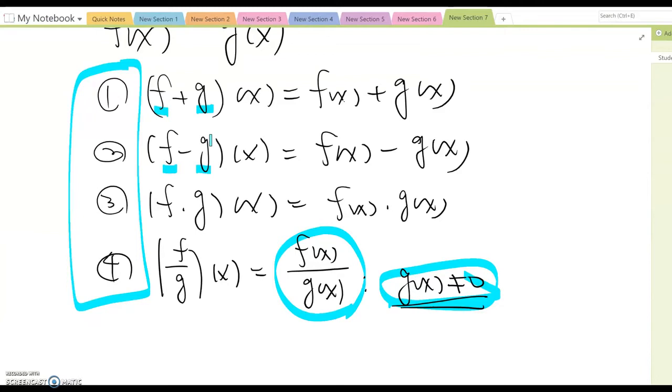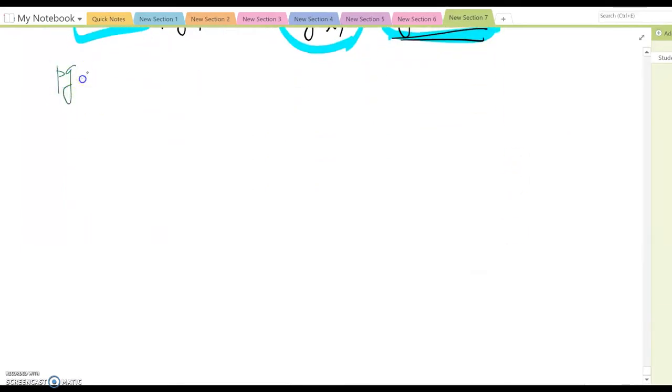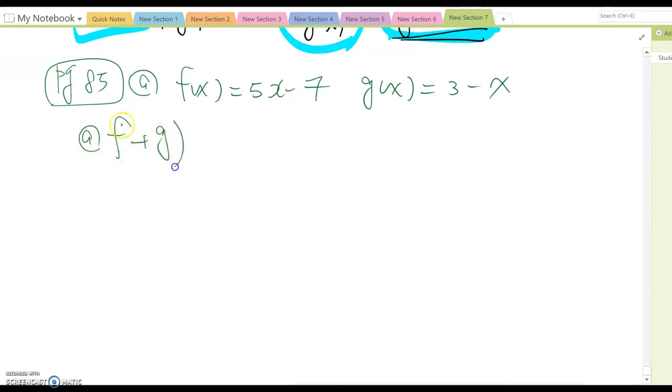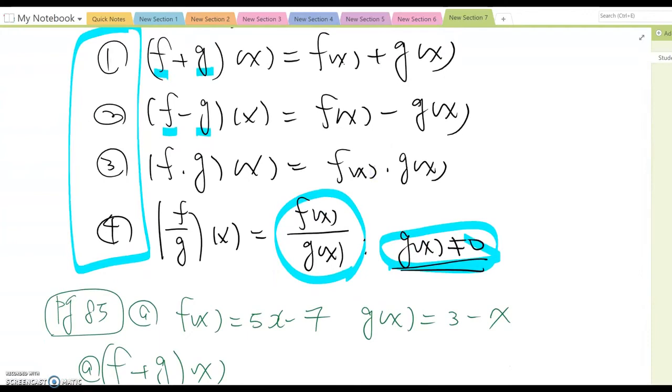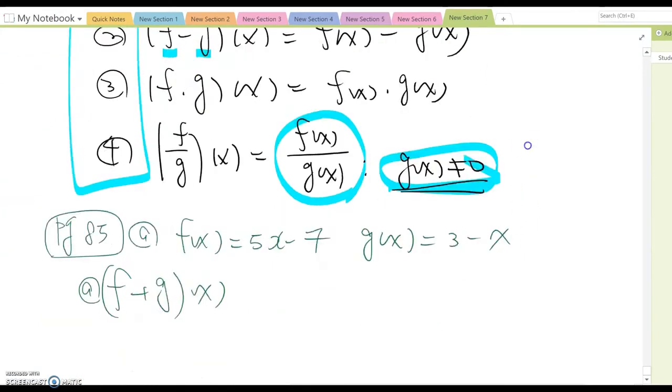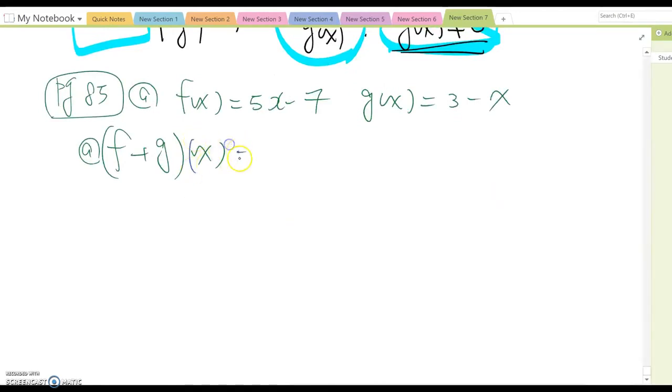Okay, then let's look at the example on page 85. So given, if you look at the given, f(x) equals 5x minus 7 and g(x) equals 3 minus x. Now we want to find out (f+g)(x) and then determine its domain. So (f+g)(x), from the property here, f+g means we just combine these two functions. Therefore you can rewrite this as f(x) plus g(x).